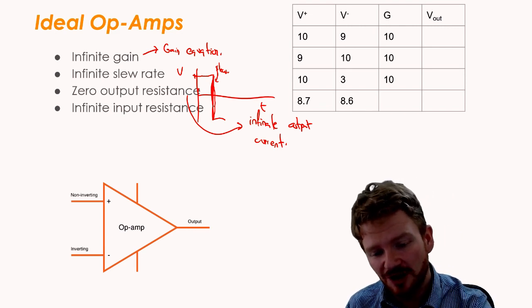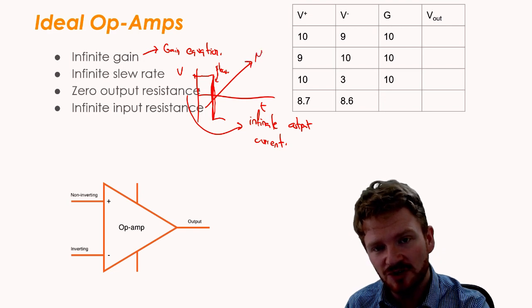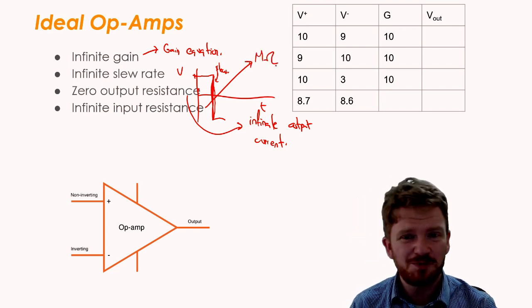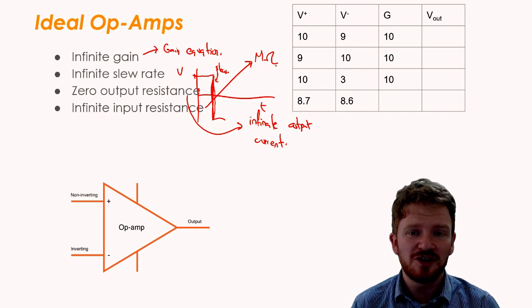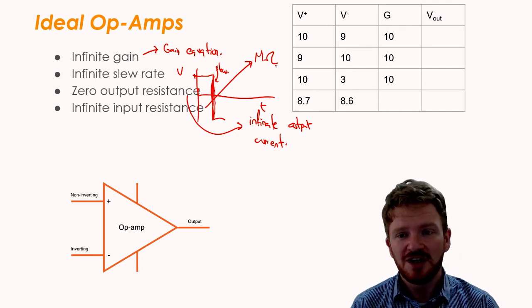We also believe that it has infinite input resistance. Now, that's a lot easier to achieve. In actual practice, usually, the input resistance is in the order of megaohms, which is basically, for most circuits, you can imagine that the input is infinite.